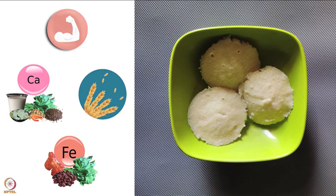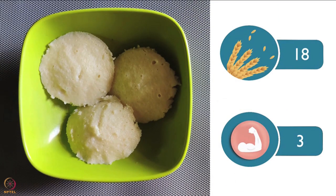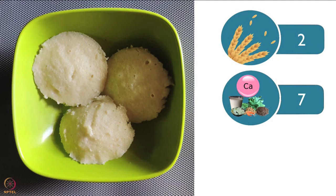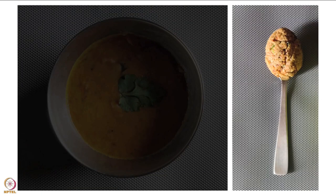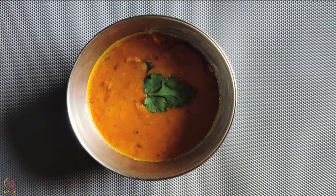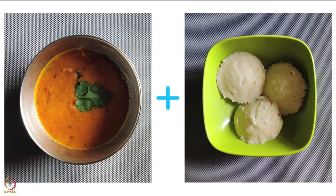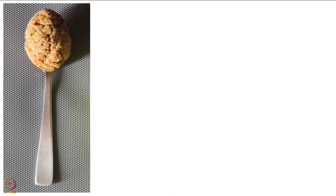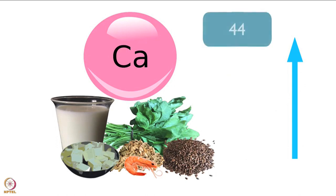We will now look at the nutrient count of idli. 3 idlis of 3 inches has 18 grams of carbohydrates and 3 grams of protein. They have 2 grams fiber, 7 milligrams calcium and 0.5 milligram iron. Half bowl of thick sambar will have 30 grams of split pigeon pea. Half medium bowl of thick sambar with idli doubles the protein content and increases calcium by 30 times. 1 tablespoon sesame peanut chutney increases protein to 7 grams and improves calcium to 44 milligrams.